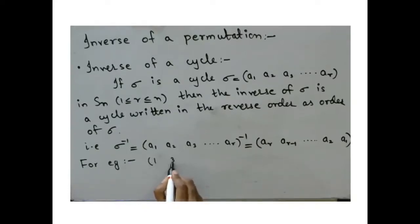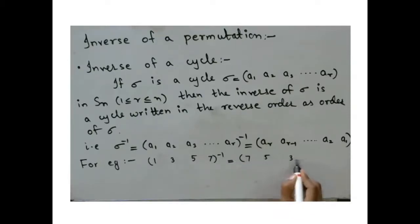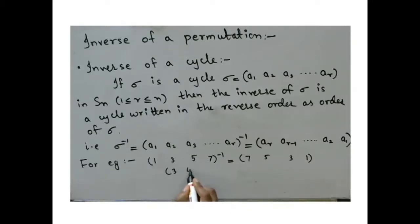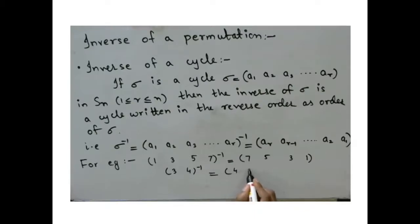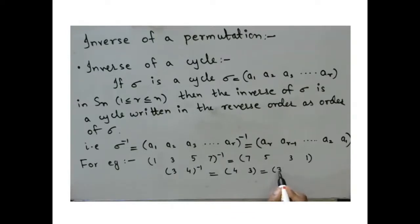For example, the inverse of the cycle (1, 3, 5, 7) is (7, 5, 3, 1). The inverse of the transposition (3, 4) is (4, 3), which is nothing but (3, 4) only, because 4 maps to 3 and 3 maps to 4 — whether you write it as (4, 3) or (3, 4) doesn't matter.